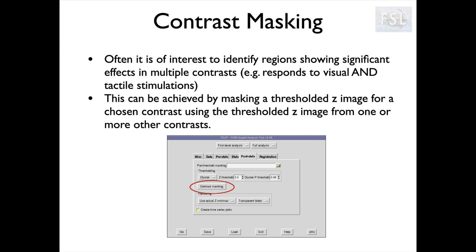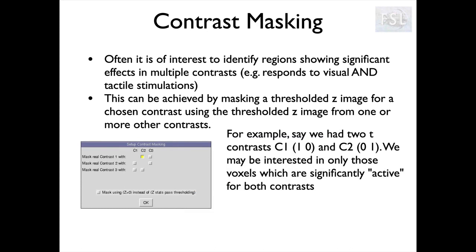Contrast masking is very easy to set up within the FSL software. In the FEAT GUI, if you go to the post stats tab, there's a button called contrast masking. If you select that, a panel pops up asking which contrast you want to mask with which other contrast. If contrast one is associated with vision and contrast two is associated with touch, I just mask one with the other. The significant voxels I get will be exactly the same whichever way around it is — the active region itself will not differ at all. So in terms of finding what areas of the brain are active, it doesn't matter which way around you set these contrast masking things up.